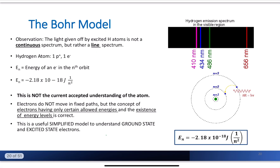We do call this the Bohr model. It's not a perfect model, but it gives us a really good way to describe where these electrons are and what's happening. Hydrogen is the most studied element because it's the simplest atom. The light given off by excited hydrogen atoms is not a continuous spectrum but rather a line spectrum.